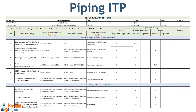Here you can see the Inspection and Test Plan for piping fabrication and installation. As we are using piping as an example, the goal is to ensure that all piping components and assemblies meet the necessary quality standards, codes, and client requirements. Now let's look at the key elements of the ITP — the stages that will drive the entire inspection process.